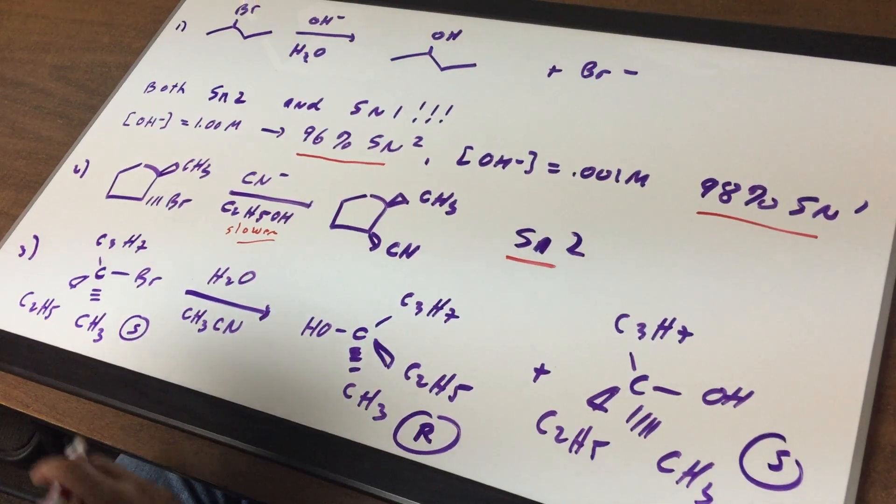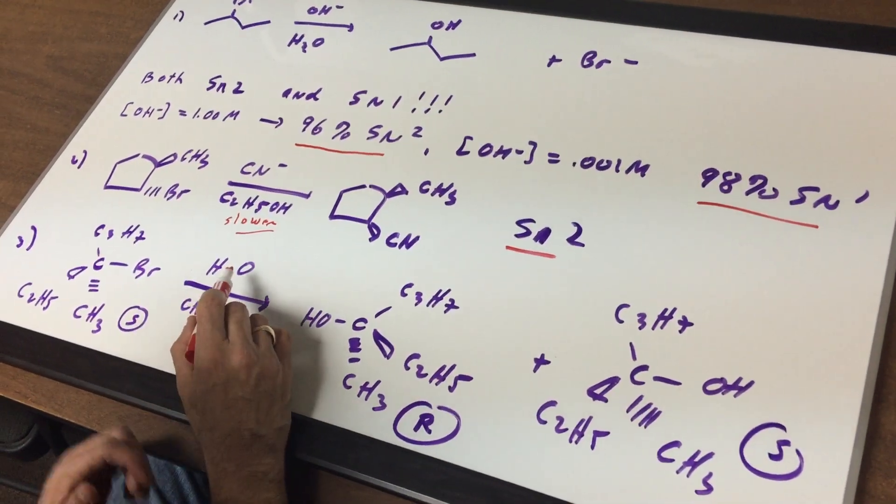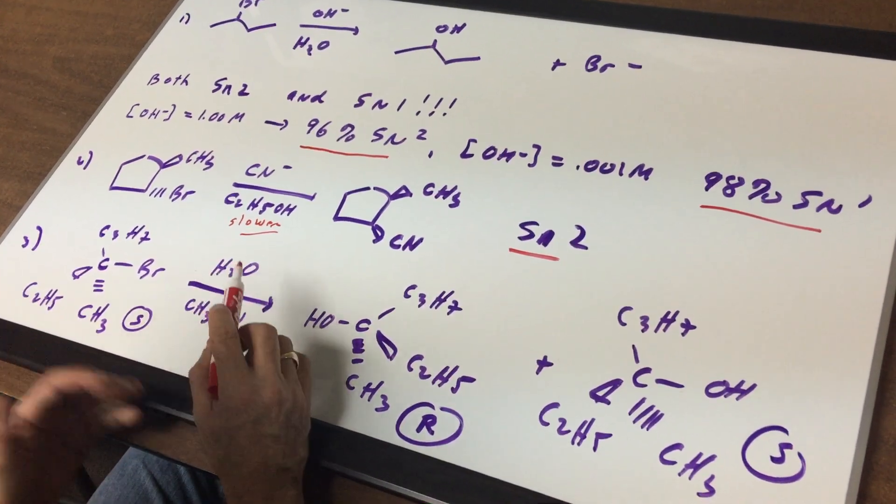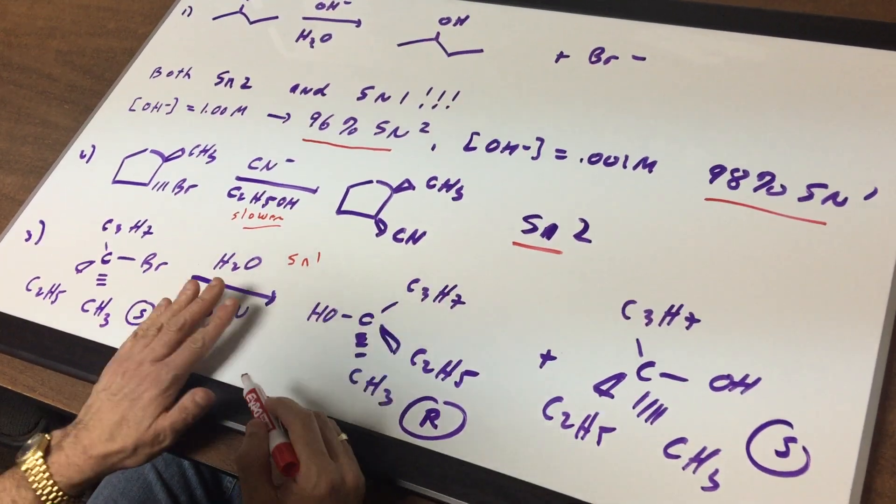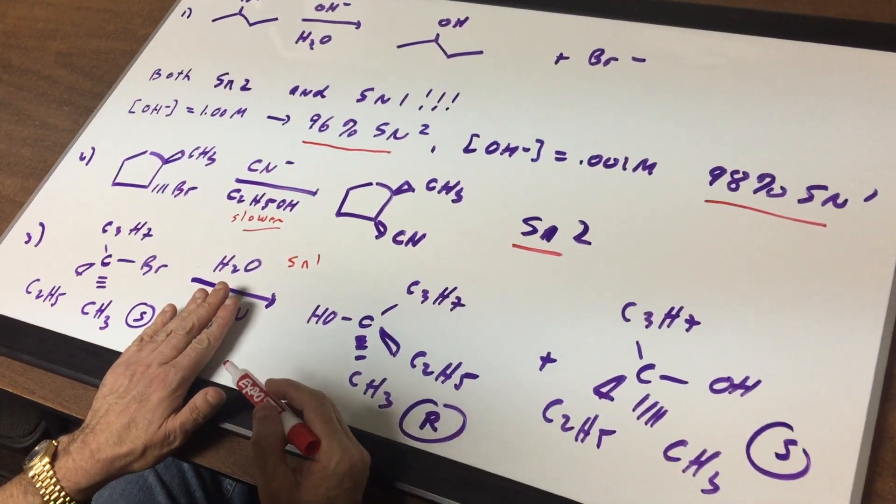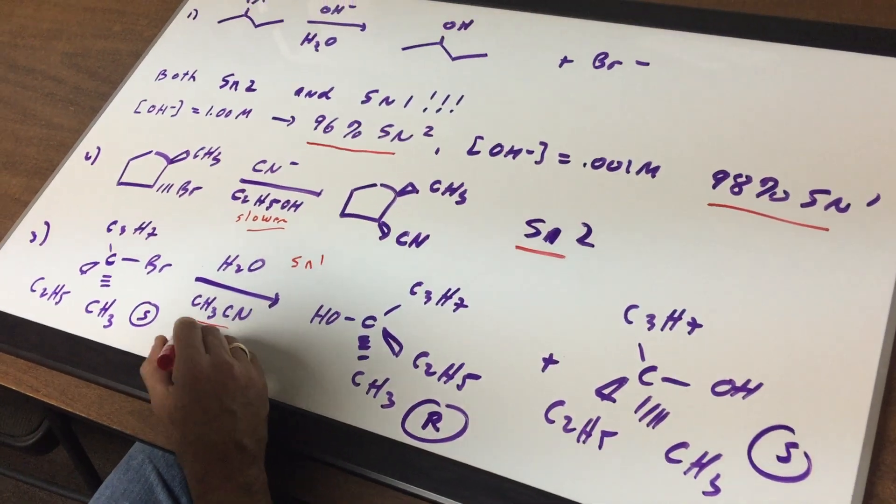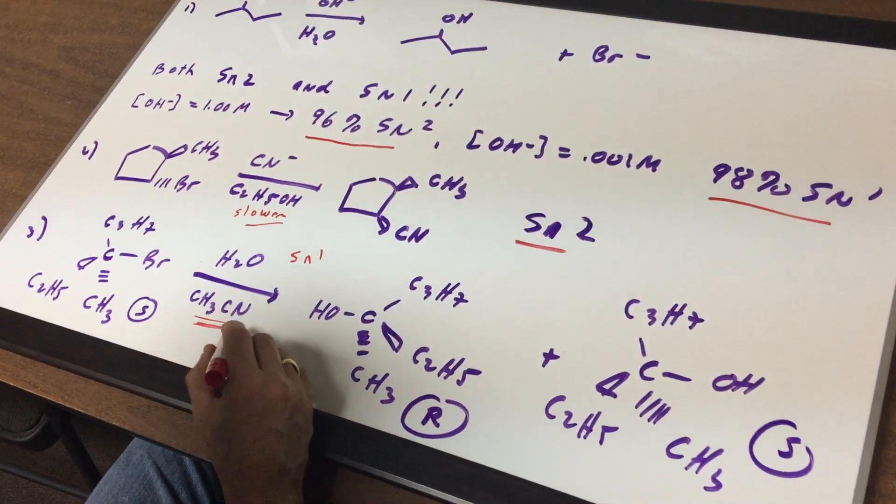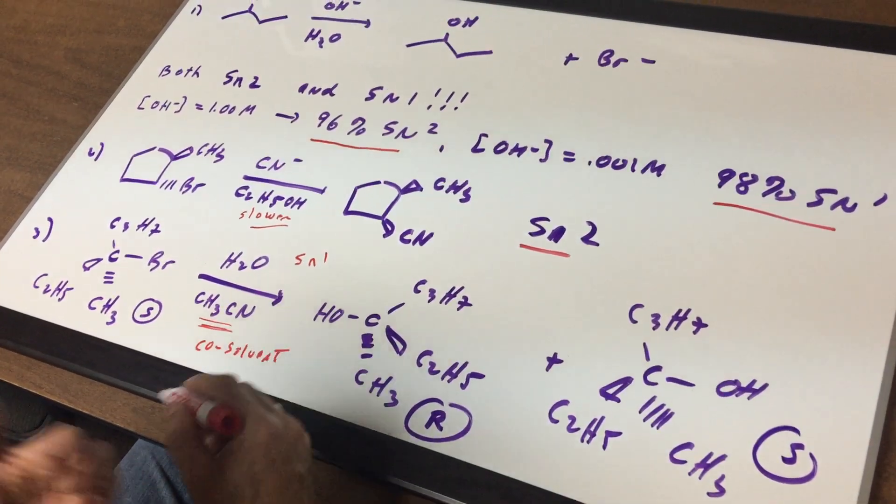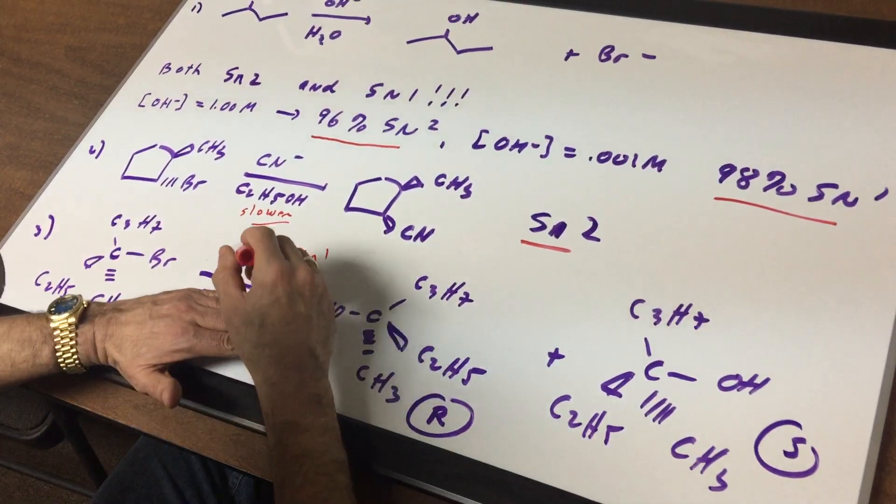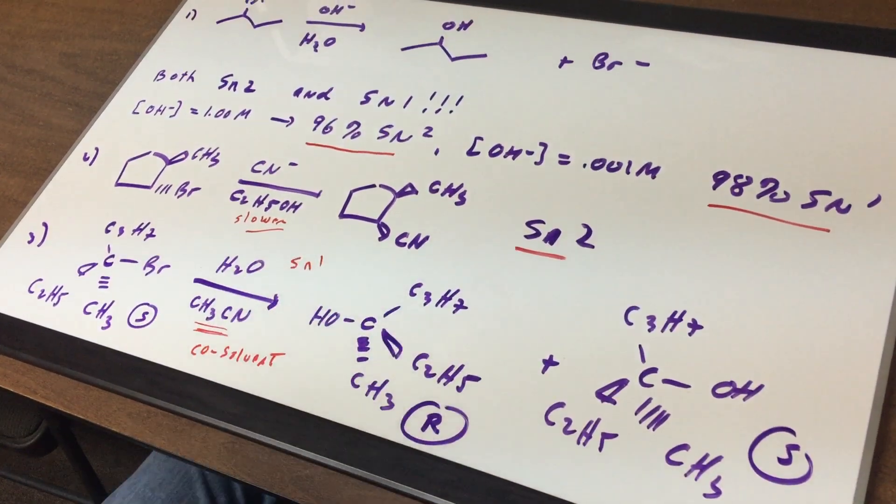In the next example, we have a tertiary halide and we have water. The minute you see a tertiary halide, you should be thinking SN1. Normally tertiaries go in polar protic solvents because it's SN1. I just added a little tiny bit of acetonitrile and that's what we call the co-solvent. That just helps it dissolve a little bit better. So mainly focus on the top one. That's the main solvent, which is going to be also the nucleophile.